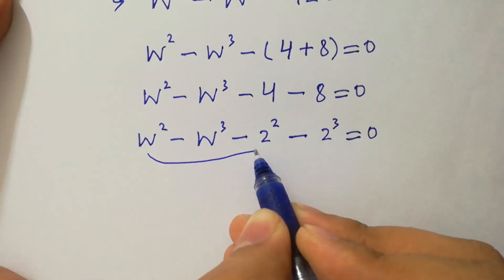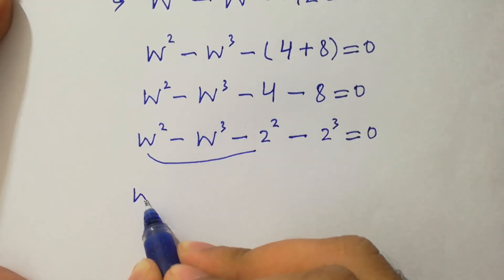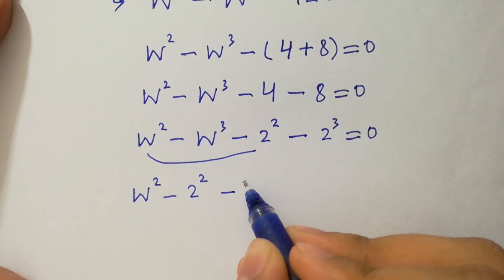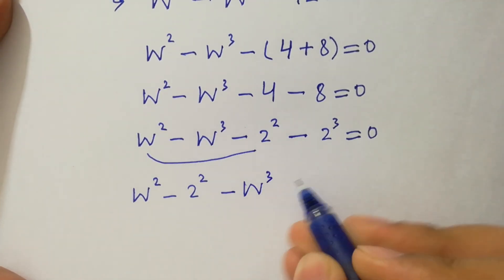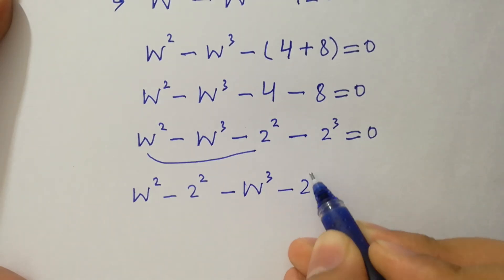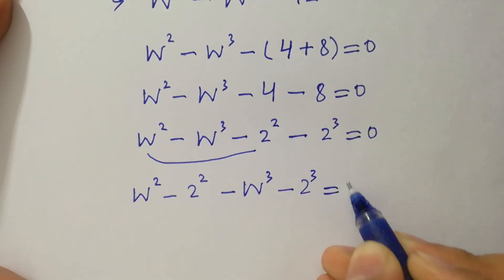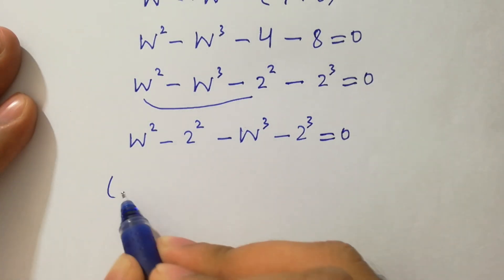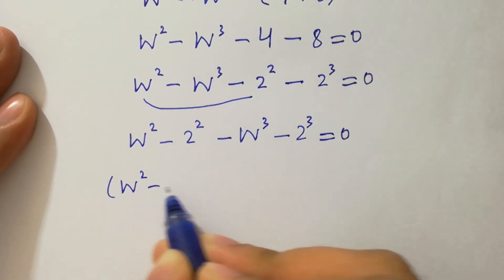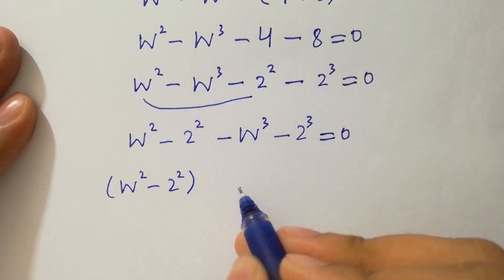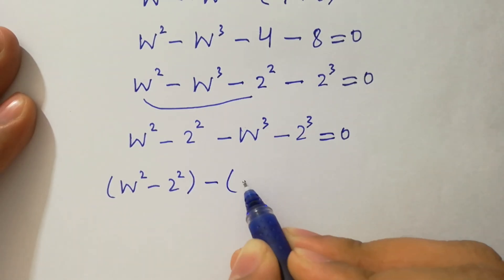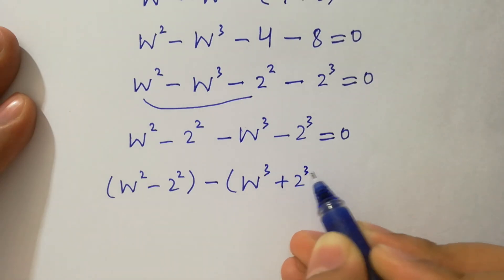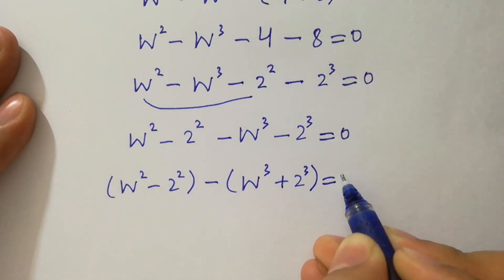Here we have w squared minus 2 squared, minus w cubed minus 2 cubed, equal to 0. Taking common, we have w squared minus 2 squared minus w cubed plus 2 cubed equal to 0.